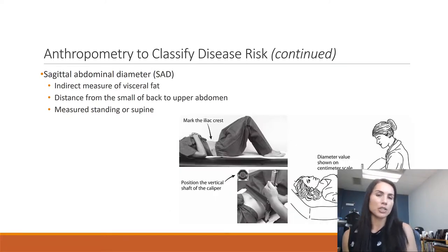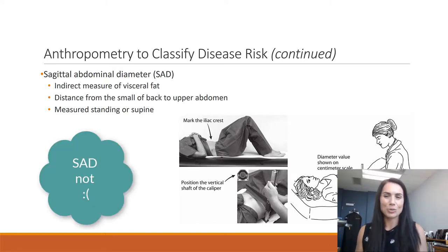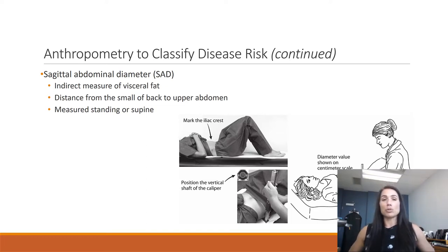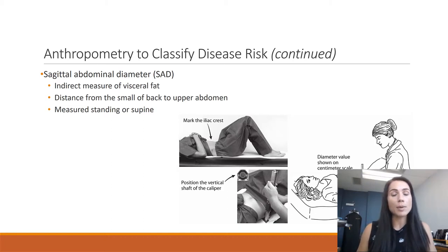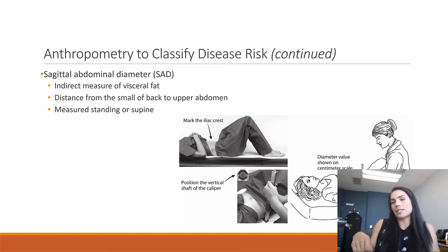This one is not seen as much in our field, but certain human performance labs use it — it's the sagittal abdominal diameter, or SAD, which is what I referred to earlier. It's an indirect measure of visceral fat, and knowing that visceral fat is very commonly found around the abdomen is why this measurement tool is used. It measures the distance from the small of the back and spine to the upper abdomen, as you can see in the photo. You measure this either with the person supine or standing, though it's usually easier when they're laying down — the device is a large metal instrument and it works better when the person is relatively motionless.